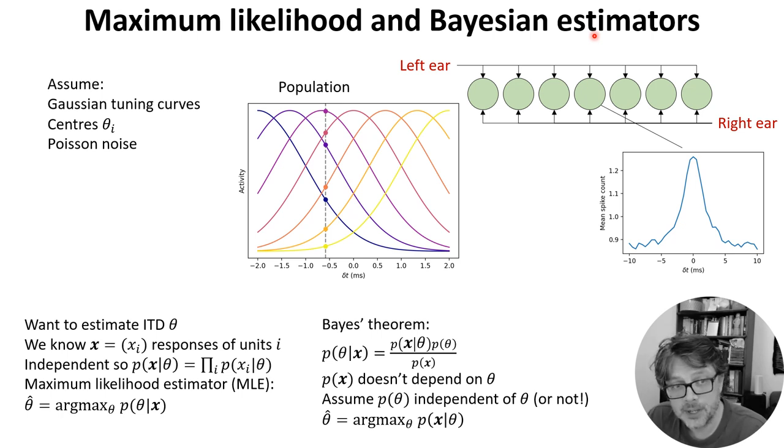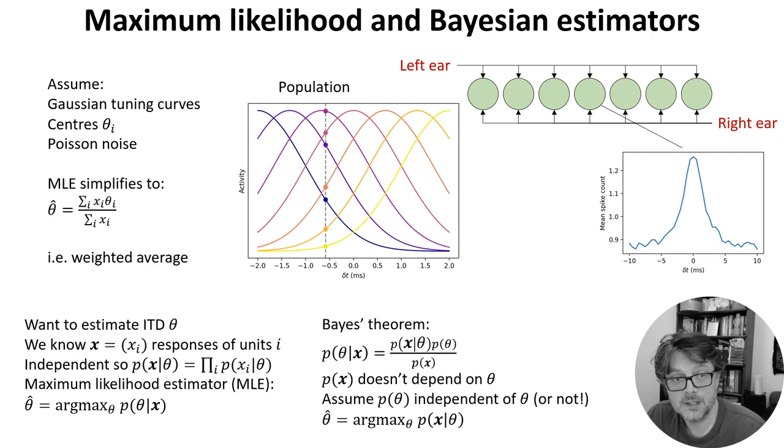All right, that all seems quite abstract probably, but in this case we can make some additional assumptions, and it simplifies very nicely. So what we're going to assume is that the shape of all of these tuning curves is approximately Gaussian, centered on some preferred ITD θ_i for neuron i. We'll also assume that the noise is Poisson distributed, which is a fairly reasonable model of neurons. With these assumptions, the maximum likelihood estimator simplifies down just to an average of the preferred ITDs, weighted by the responses. All right, now that was a very quick run through probabilistic population coding, and if you're interested in more on that, I'd recommend the Theoretical Neuroscience Textbook by Dayan and Abbott, or, since that one's out of print, a more recent book, Bayesian Models of Perception and Action by Wei Ji Ma and colleagues, available free online and linked in the reading materials.